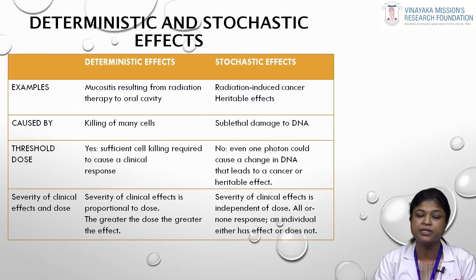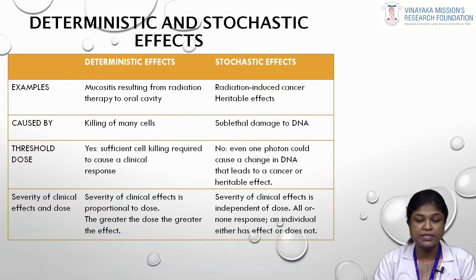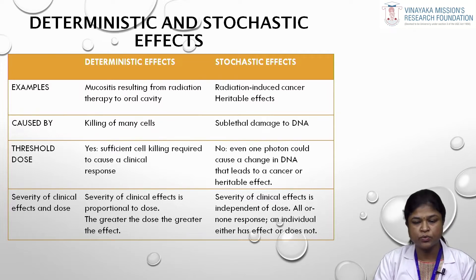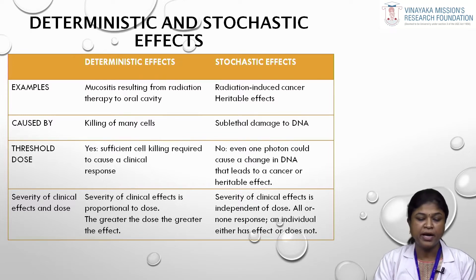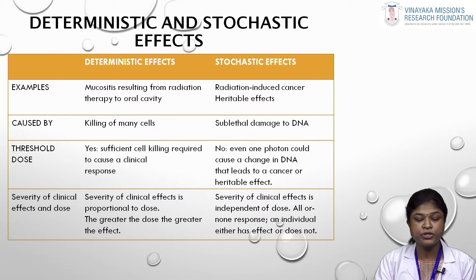An example of deterministic effect is mucositis, where cells of the mucosa die and produce an immediate reaction. Stochastic effect includes cancer formation or heritable disease passed to offspring. Deterministic effect is caused by killing of many cells, while stochastic involves only sublethal DNA damage. Deterministic effect has a threshold dose — sufficient cell killing is required to cause clinical response — whereas stochastic has no threshold: even a single photon can cause a DNA change leading to cancer or heritable effects. In deterministic effects, severity is proportional to dose; in stochastic, an individual either has an effect or does not.